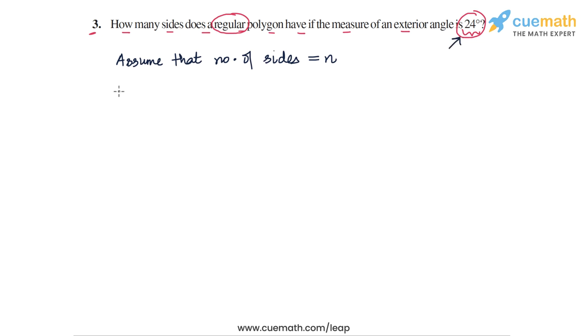Each measuring 24 degrees. So the sum of all the exterior angles of this polygon will be n into 24 degrees, because there are n exterior angles and each of them measure 24 degrees because the polygon is a regular polygon.